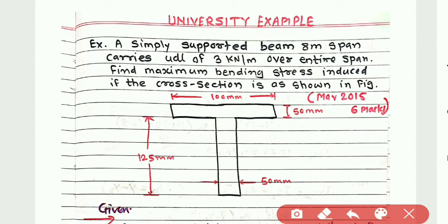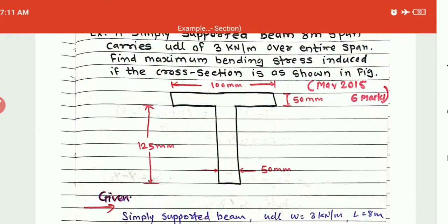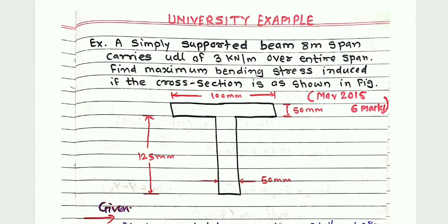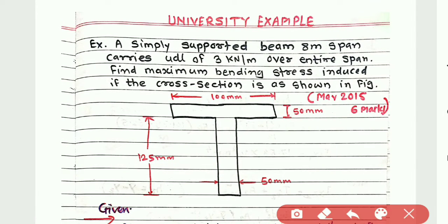Let us read the example carefully. A simply supported beam of 8-meter span carries a UDL of 3 kilo-Newton per meter over the entire span. Find the maximum bending stress induced if the cross-section is as shown in the figure — that is a T-section. The web dimensions are 120 mm × 50 mm and the flange dimensions are 100 mm × 50 mm.